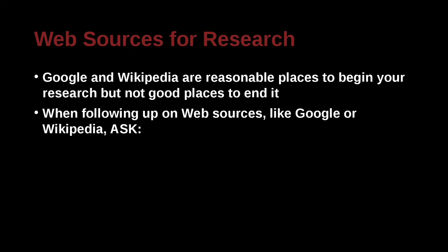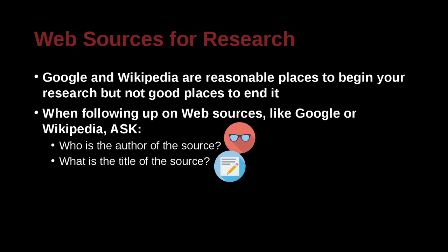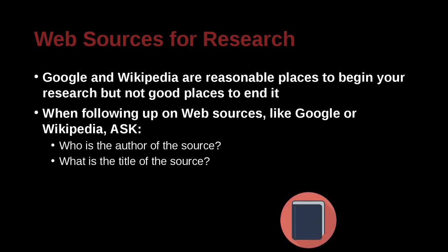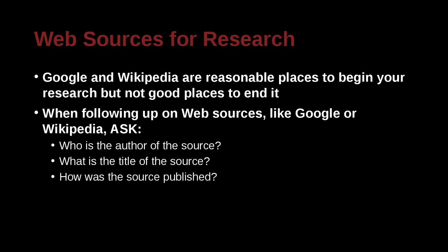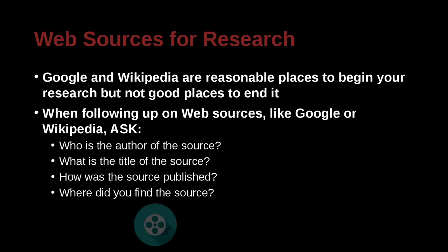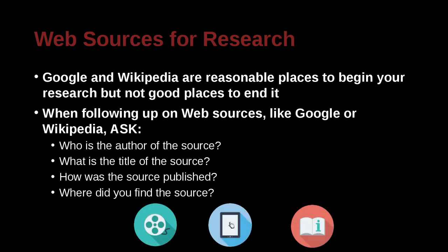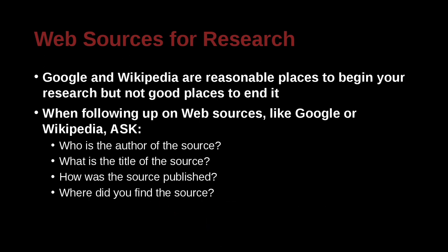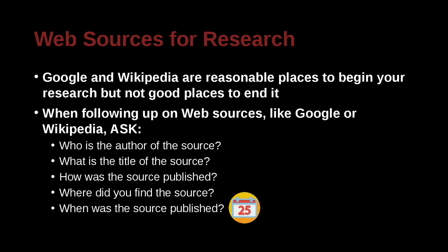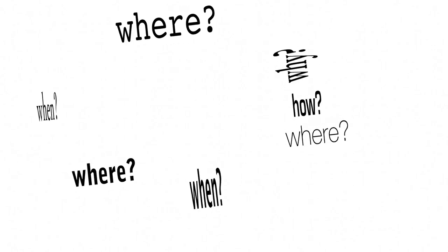When you find information on the Internet — like on a Google search or in a Wikipedia article — there are some things you can ask. Who is this information from? What is the title of the source information, not the Wikipedia page, but the actual source? Where did the information come from? For example, if Wikipedia says tens of millions of people died in the Taiping Rebellion in China, look in the sources — it's probably from a book with an author, which is a good source. How was the source published — as video, text, or a scanned magazine? Where did you find the source? And when was it published? Who, what, how, where, when — these are all great questions.